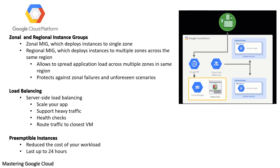Load balancing: Managed instance groups can work with load balancing services to distribute network traffic to the closest instances in the group. Google Cloud offers server-side load balancing so you can distribute incoming traffic across multiple VM instances. It scales your application, supports heavy traffic, detects and automatically removes unhealthy VM instances using health checks, and routes traffic to the closest VM.